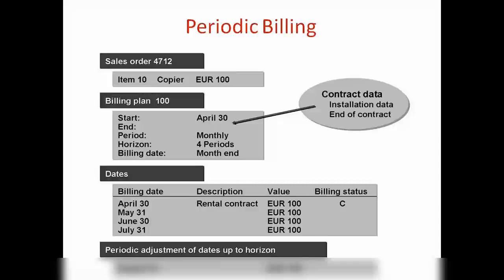So that's your Periodic Billing. This is basically used in the scenario of contracts — for example, when you've created a contract to repair machinery or something and you want to charge the customer on a periodic basis.